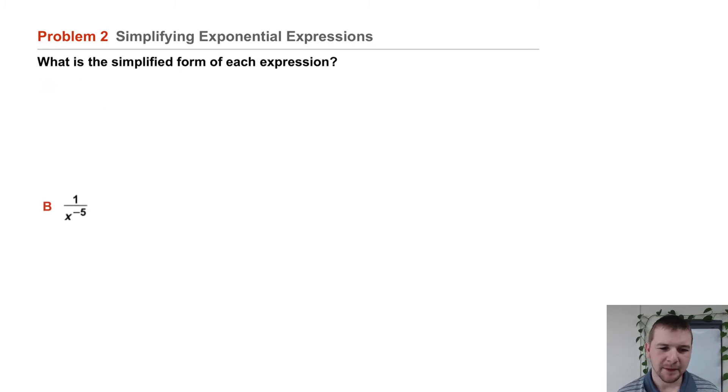Part B: 1 over x to the negative 5th power. Again we have a variable raised to a negative power, so it's not in simplest form.